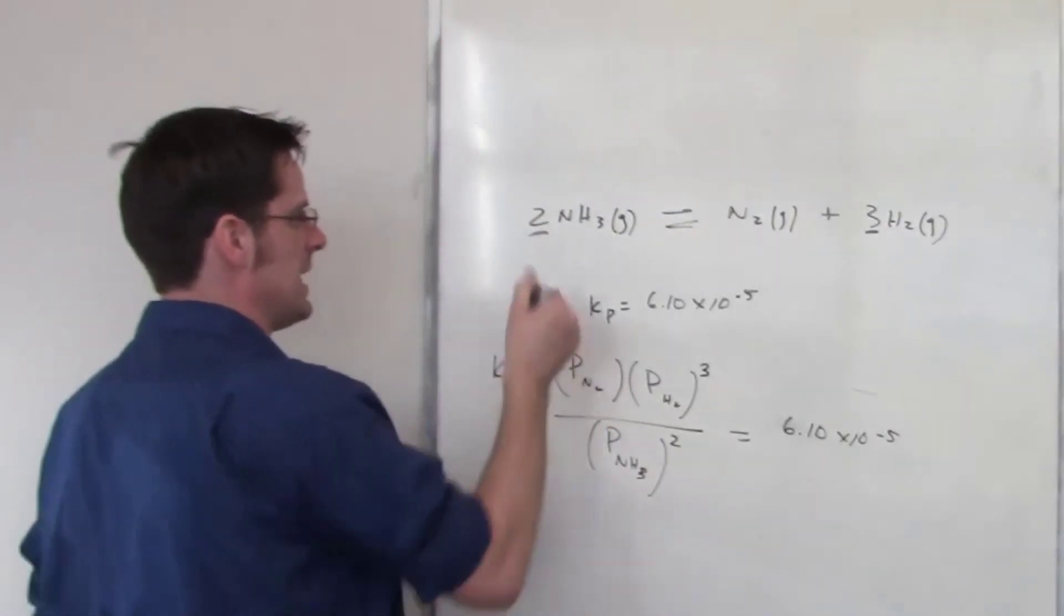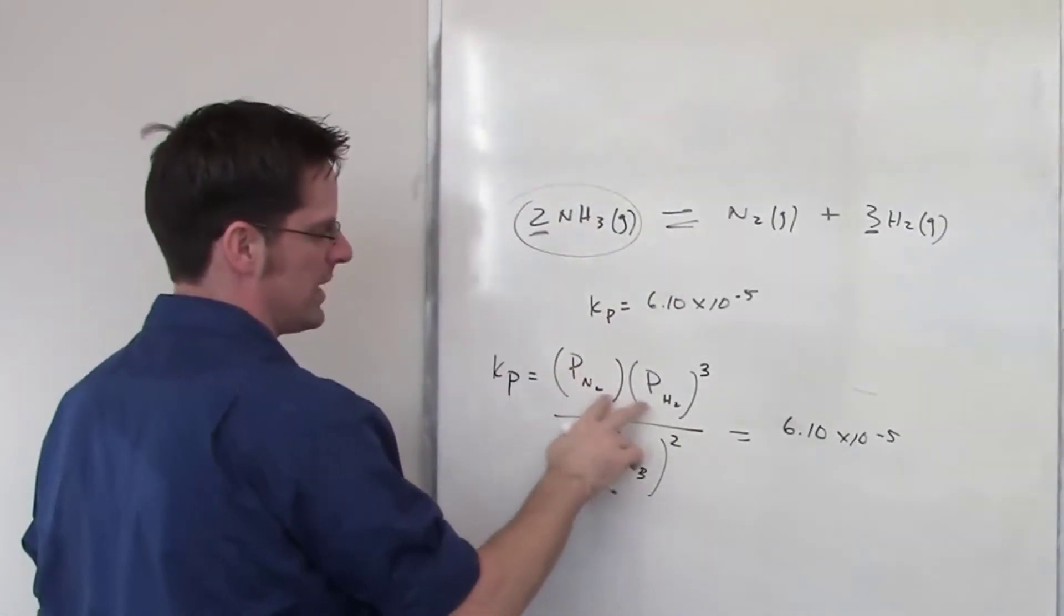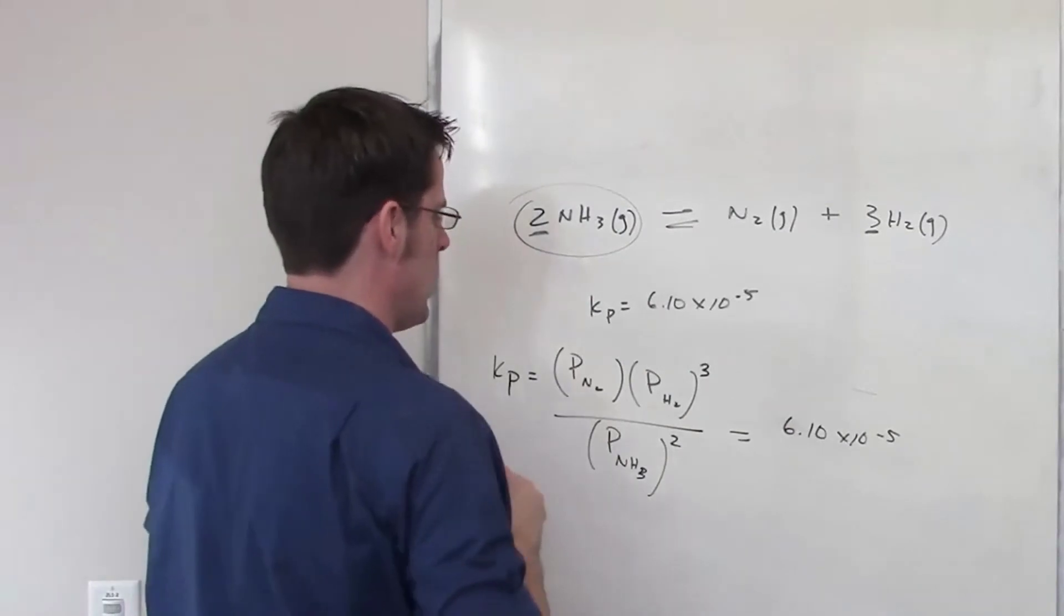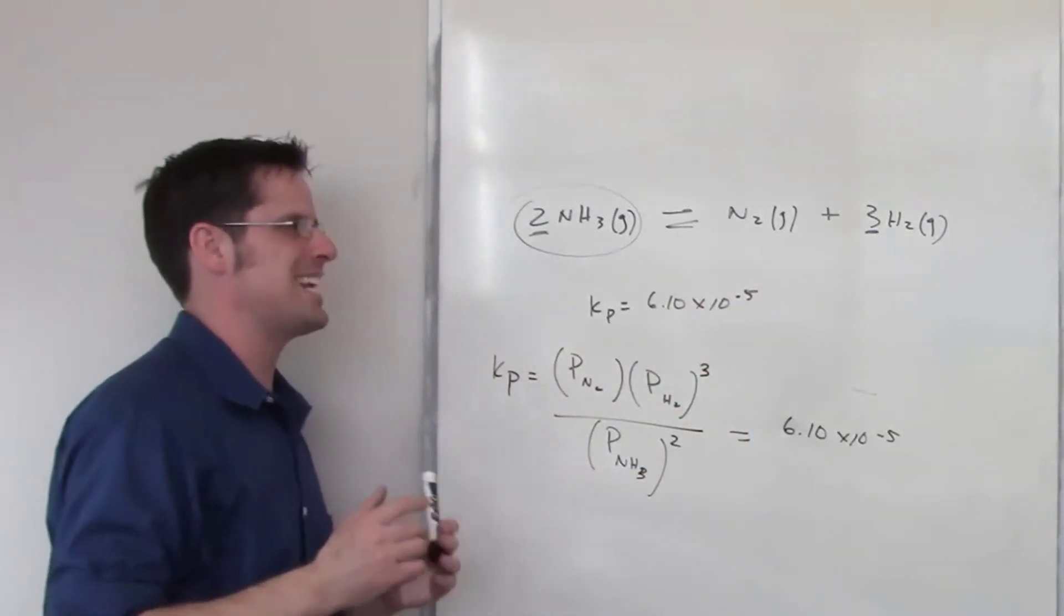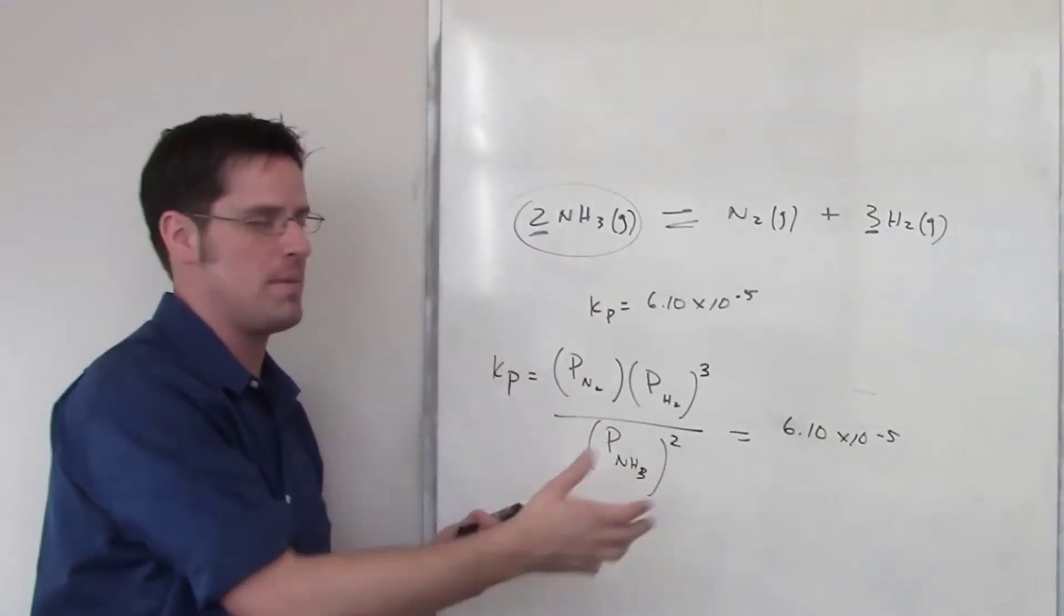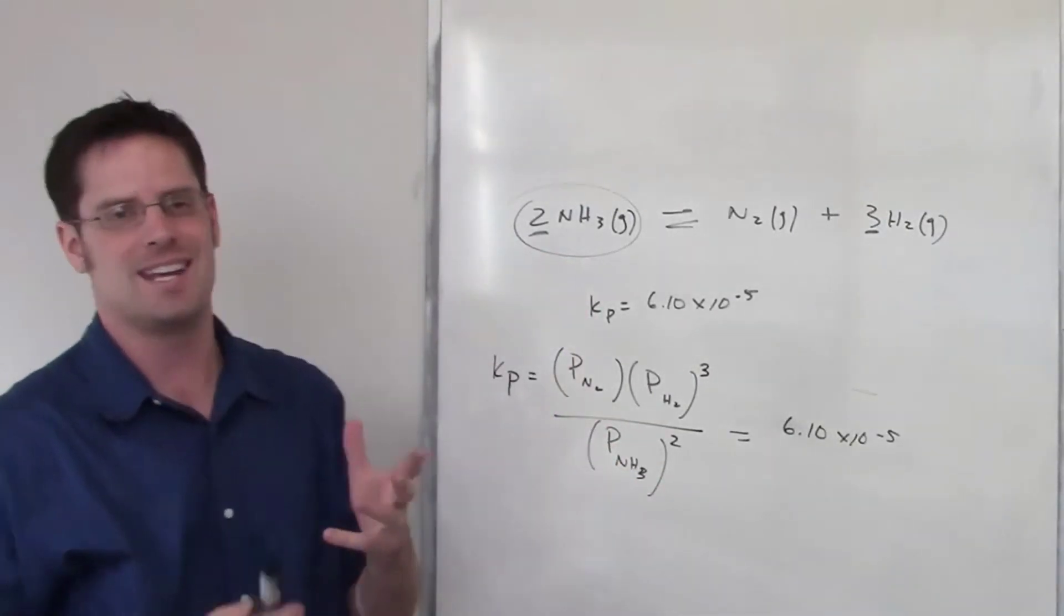the amount of NH3 is going to be much, much larger than the combined amounts of the products N2 and H2. So the correct answer to this question is we're going to get a dominant amount of NH3 with some small amounts of N2 and H2.